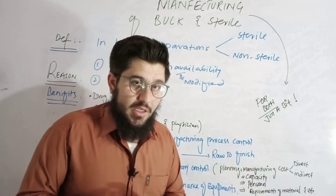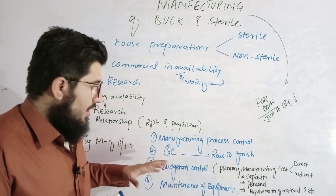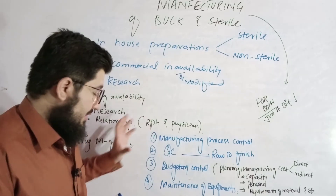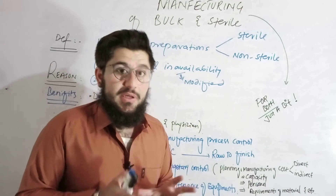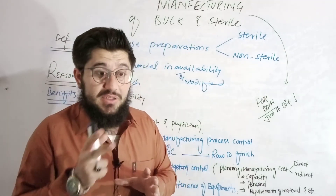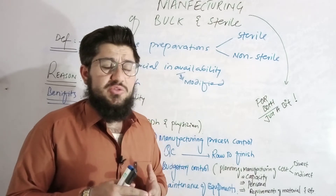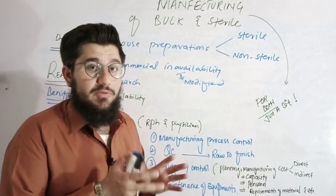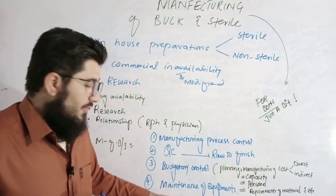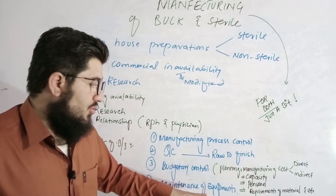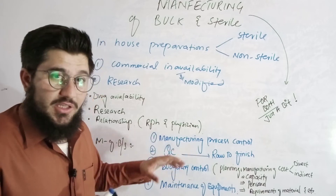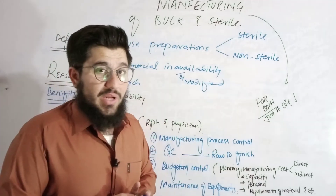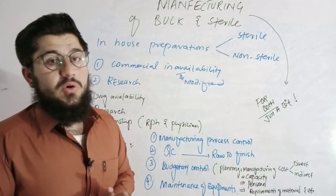Then we have maintenance of equipment, which is a very important part of the system. We maintain equipment so that it functions properly. Equipment is checked from initial to final — checked daily, on a monthly basis, or by engineers placed for daily purposes to monitor how machines are performing. If equipment is okay, the economic system is okay, the product is synthesized according to need, and manufacturing processes are in control, then our in-house preparation will be good.